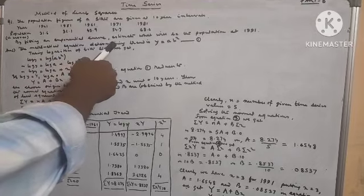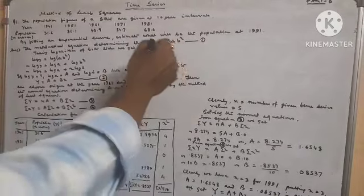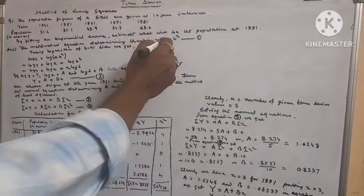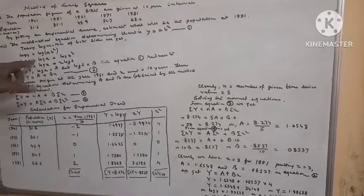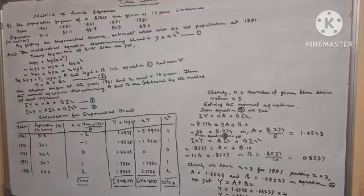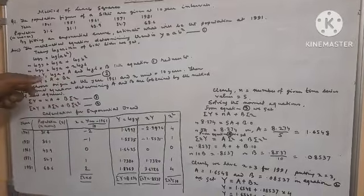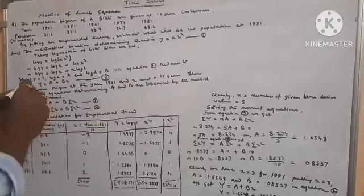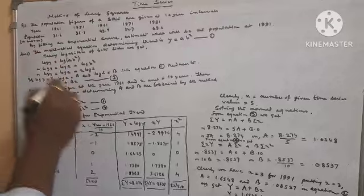The mathematical equation determining the trend is y = a · bˣ — that is equation 1. This is the exponential trend equation. Taking log of both sides: log y = log(a · bˣ), or log y = log a + log bˣ, or log y = log a + x·log b. If we let capital Y = log y, capital A = log a, and capital B = log b, then equation 1 reduces to: Y = A + Bx — that is equation 2.